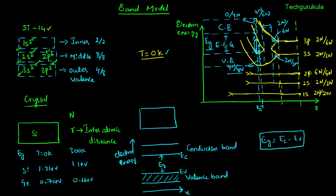The key takeaway from this video: a silicon crystal can be represented in the band model as a conduction band and a valence band separated by the energy band gap Eg. At T = 0 K, the entire valence band is completely filled with electrons and the conduction band is completely empty.